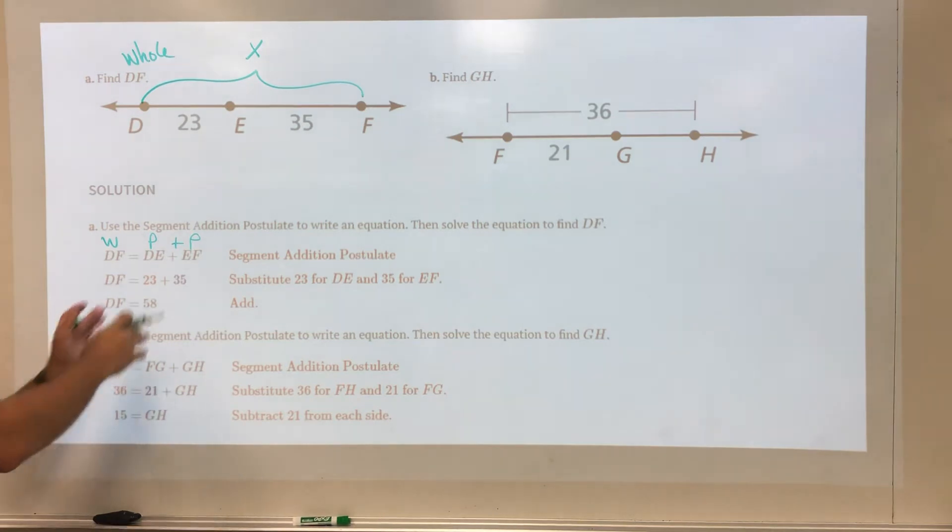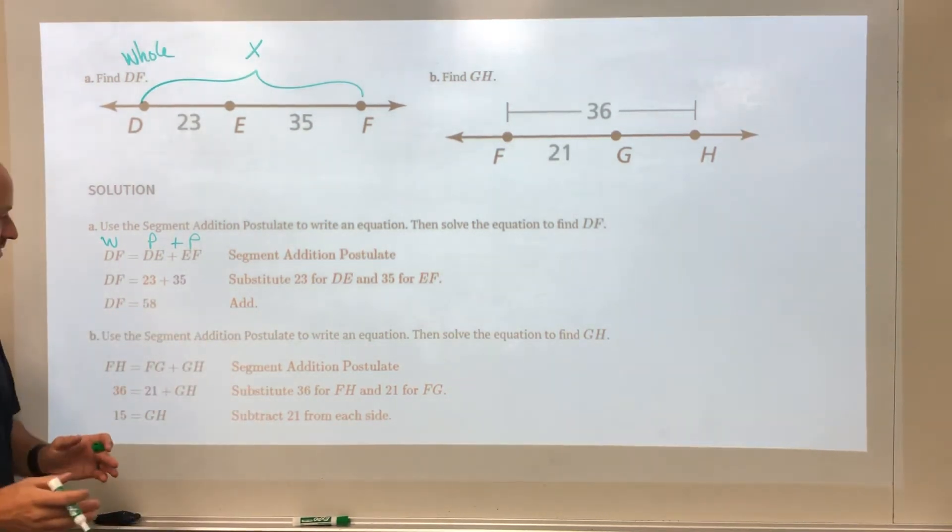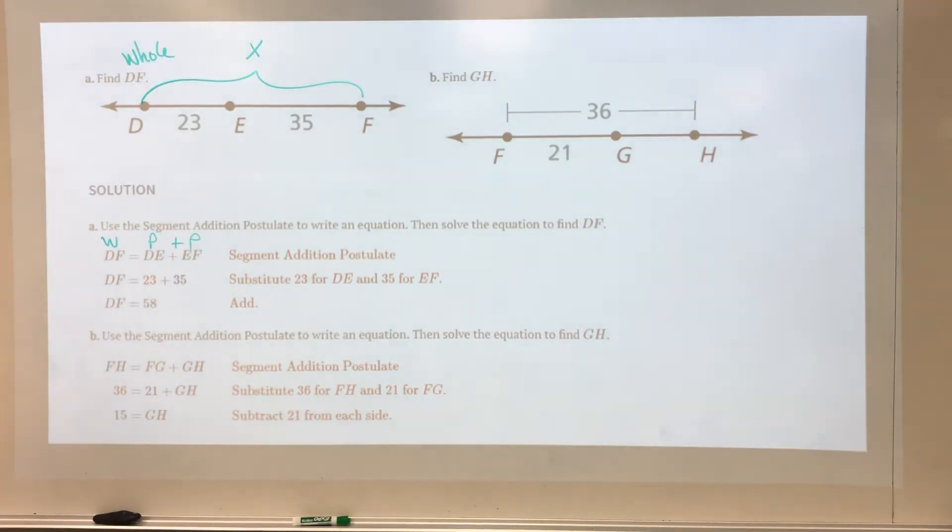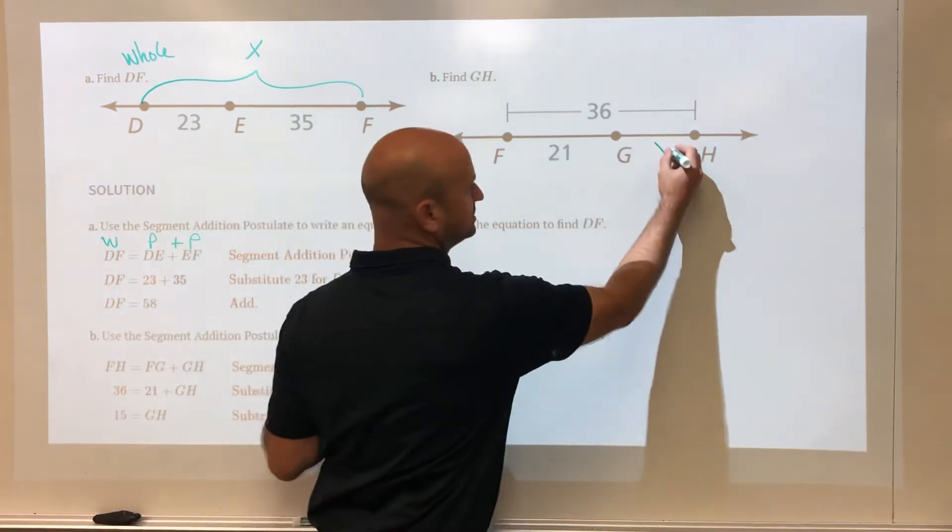So every problem for segment addition, first thing you must do is identify: is it a part or is it a whole? So that's pretty easy. For part B they want to find GH. Well we see that GH is a part.